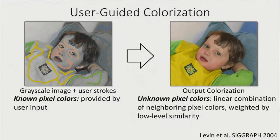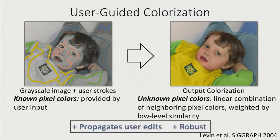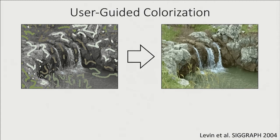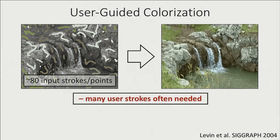In SIGGRAPH 2004, Levin et al. proposed seminal work called "colorization using optimization." There, a user could draw color strokes on top of a grayscale image. The unknown pixel colors are then defined to be a linear combination of their neighboring pixel colors. The weighting is determined by a low-level similarity metric. The method then solves a linear system to produce the full output colorization, providing very good colorizations given good user edits, as seen in this example. However, we notice the method requires many user points — as many as 80.